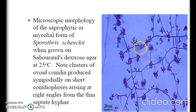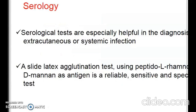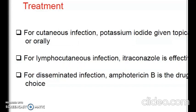The microscopic morphology of Sporothrix schenckii grown on SDA at 25°C shows clusters of ovoid conidia produced sympodially on short conidiophores arising at right angles from thin septate hyphae. Serological tests are helpful in the diagnosis of extracutaneous or systemic infections. A slide latex agglutination test using peptido-L-rhamno-D-mannan as antigen is a reliable, sensitive, and specific test. For cutaneous infection, potassium iodide is given topically or orally. For lymphocutaneous infection, itraconazole is effective. For disseminated infection, amphotericin B is the drug of choice.